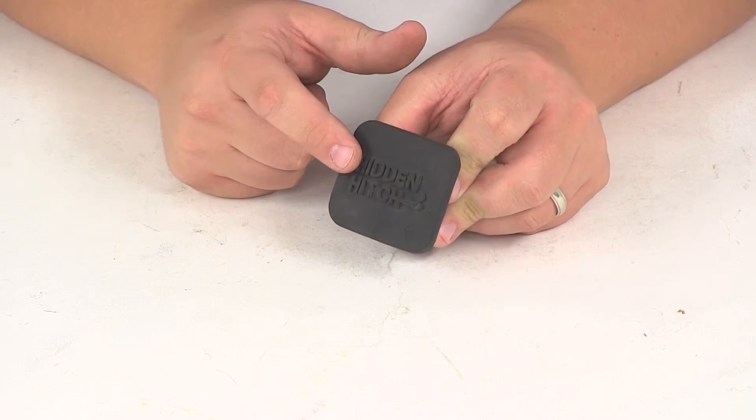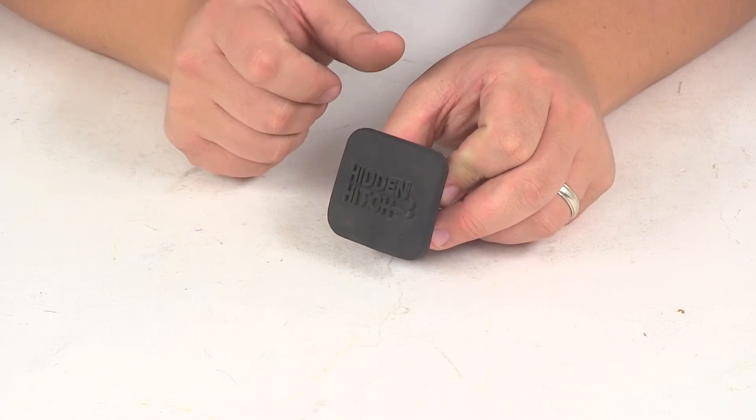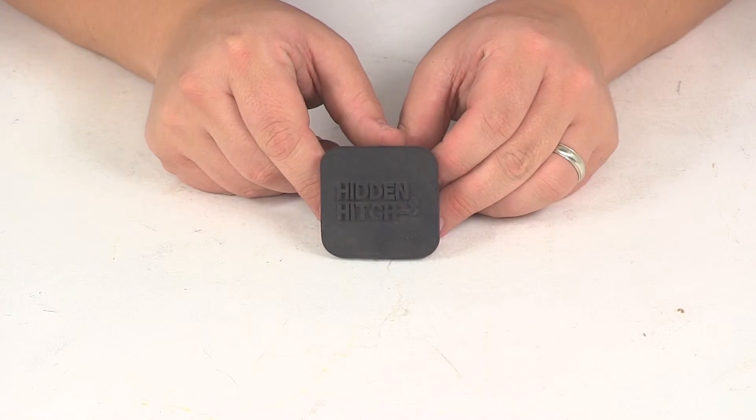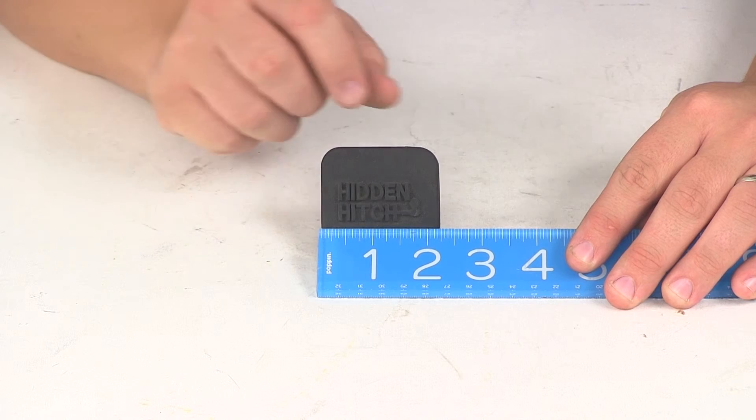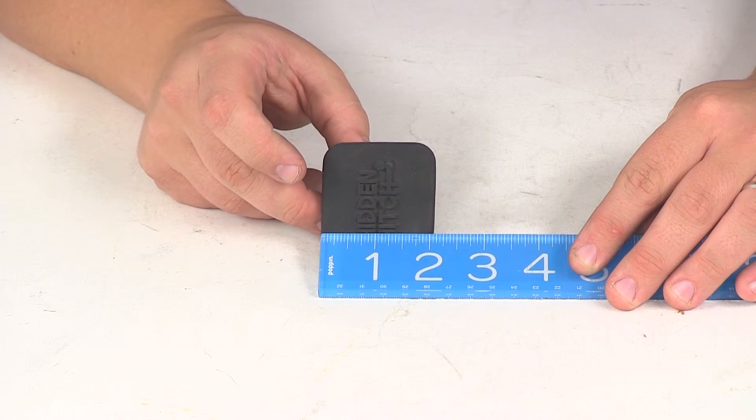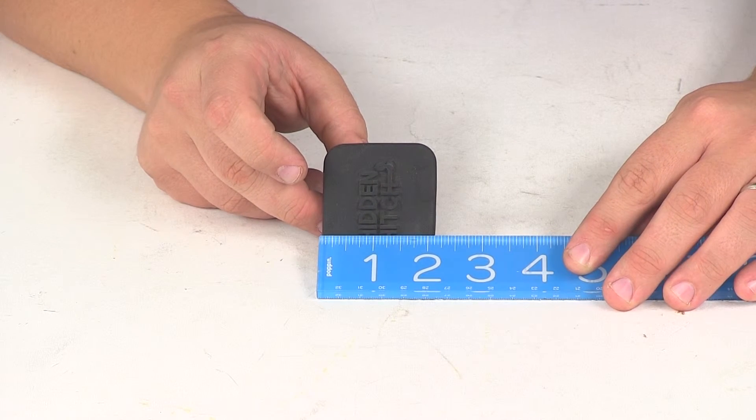At the front, it has raised lettering with the hidden hitch logo. Taking a measurement of the front face, measuring in this direction is 2 and 1/4 inches. Measuring in this direction is about 2 and 1/8 inches.